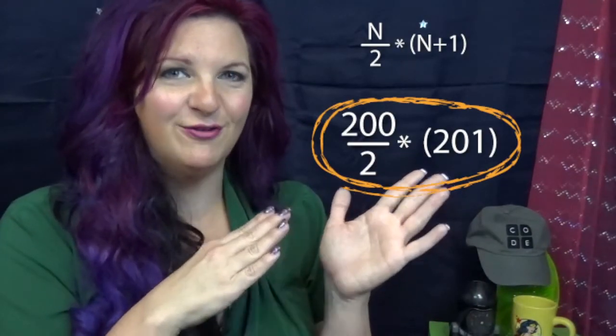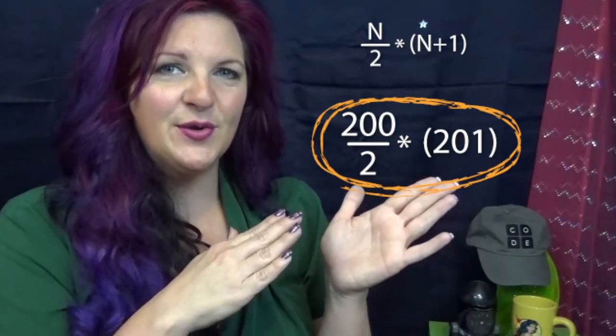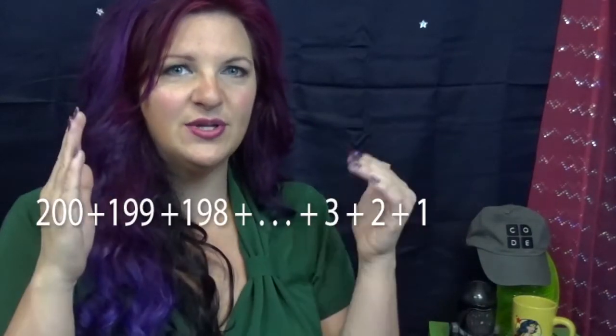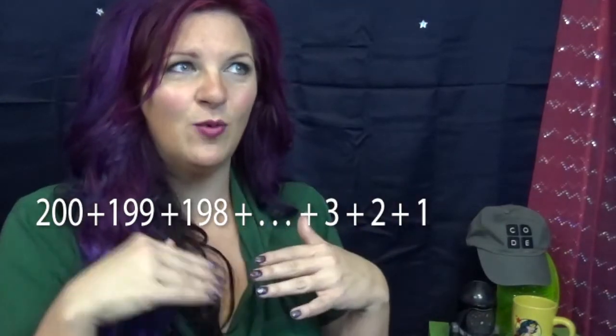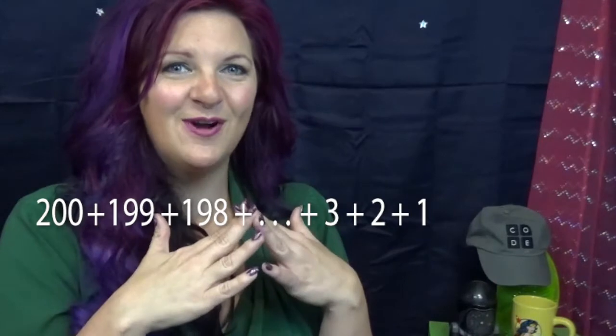Then show them the pattern in that problem. The reason we use 1 to 200 is because 200 divided in half is 100, and 100 is easy to multiply by. You teach them that 200 plus 1 is 201, and 199 plus 2 is 201, and 198 plus 3 is 201. You keep showing them that pattern until eventually they see that you just have 100 sets of 201. And certainly they can multiply 201 by 100 in their head, so then they get the answer.